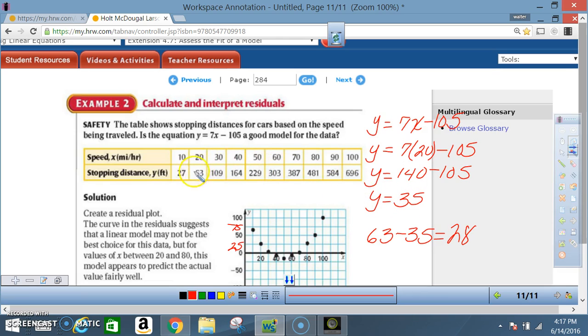You got to take the y value from the table and subtract the predicted y value, which was 35. So 63 minus 35 is 28. That's what you're going to plot. When x is 20, you're going to plot 28, and that's what they did here - when x is 20, they plotted 28 about right there. You got to do this for each and every point.